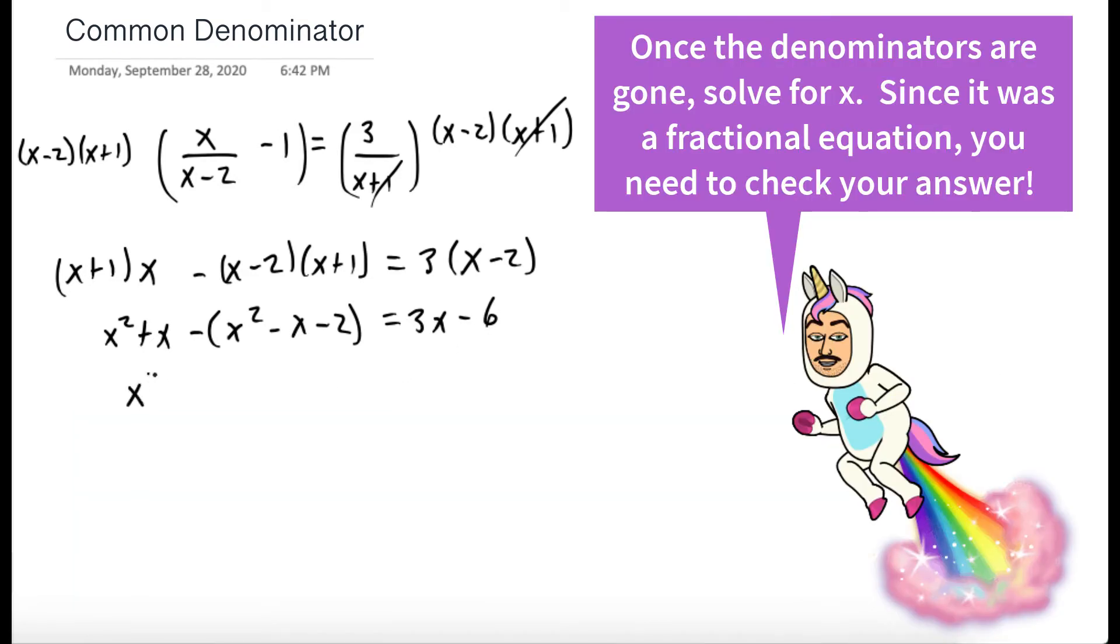So we have x squared plus x. Now let's multiply that negative all the way through. So minus x squared plus x plus 2 is equal to 3x minus 6.